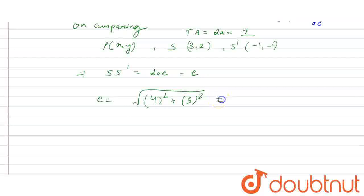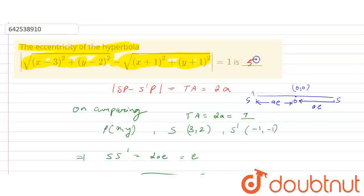We need to find the eccentricity. This equals √(16 + 9) = √25 = 5. So the eccentricity e equals 5. This is our answer for this question. Thank you.